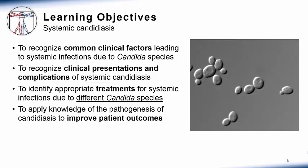In this discussion of systemic candida infections, our learning objectives will be: first, to recognize the clinical factors that can predispose patients to these infections; second, to consider the ways in which patients will present to their clinicians when experiencing systemic candida infections, and especially how to recognize serious complications; third, we will define rational antifungal treatment strategies based on the specific candida species isolated; and fourth, all the while as thinking clinicians, we will consider what is known about the pathogenesis of these infections to better envision improved outcomes for our patients.